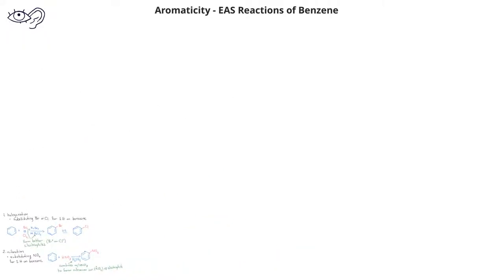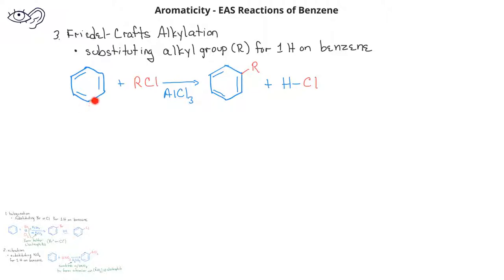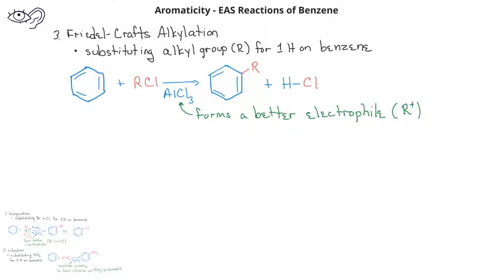Two other reactions can be used to add carbon groups to the benzene ring. The first of these is Friedel-Crafts alkylation, which substitutes an alkyl group or a CH3 group for one of the hydrogens on the benzene ring. In this reaction, the benzene ring reacts with an alkyl halide in the presence of AlCl3 to add the alkyl group to the benzene ring. The AlCl3 is present to form a better electrophile — in this case, the carbocation formed by the loss of the chloride from the alkyl halide.